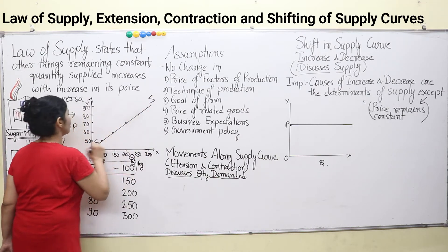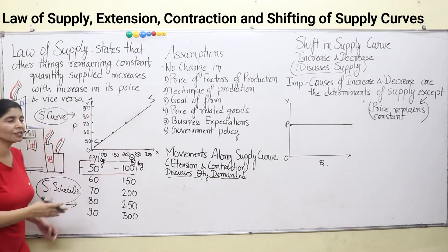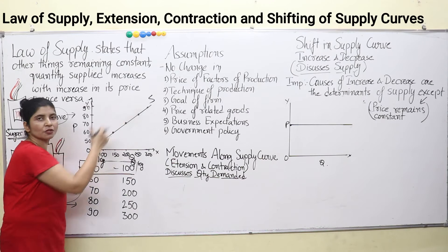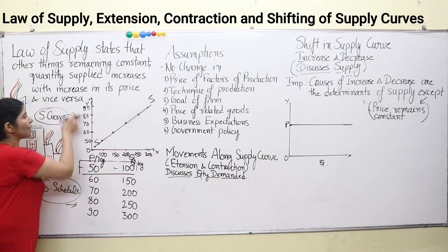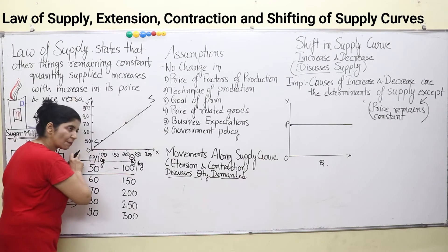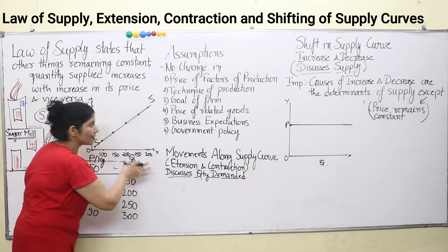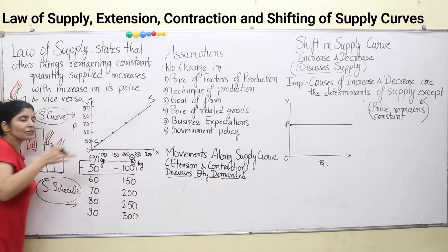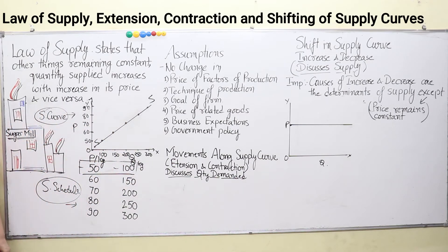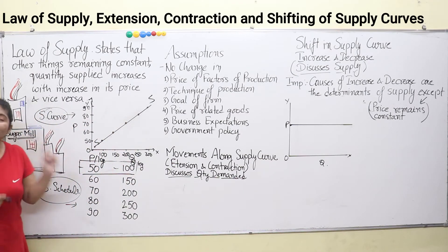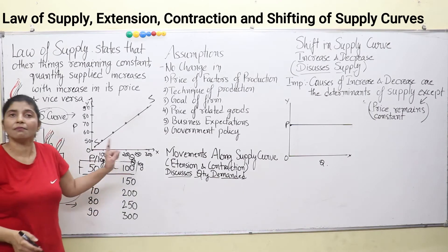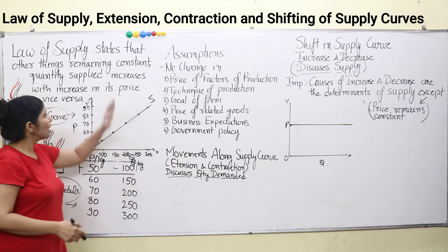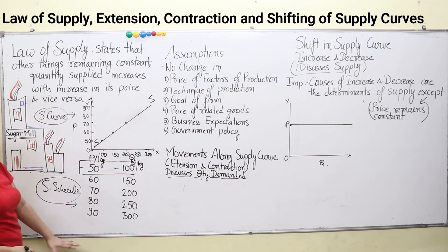What is the slope of the supply curve? It is positively sloped. Why? Because as price is increasing, the quantity supplied is also increasing. So the supply curve has a positive slope — that means there is a direct relationship between price and the quantity supplied by producers in the market. This is the law of supply.